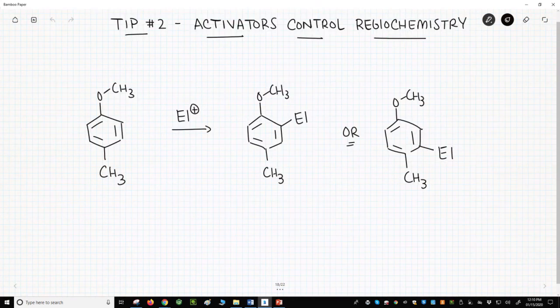The second tip, the activating groups on the ring control the regiochemistry. In this playlist, we've only seen EAS reactions of aromatic rings with one R group. What if you have two R groups? Here is an example.